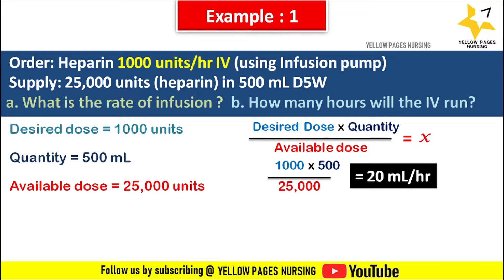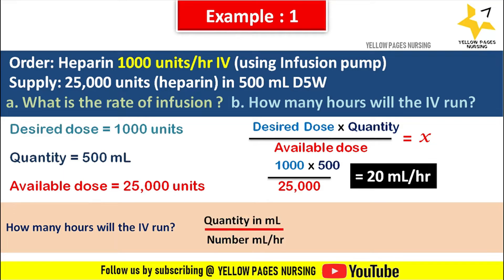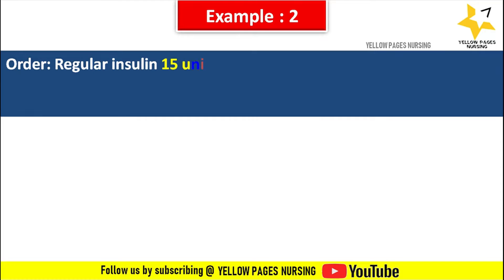Applying all values in the formula, we get 1,000 × 500 ÷ 25,000, which gives 20 ml per hour. So we set 20 ml per hour in the infusion pump. The next question is: how many hours will the IV run? The formula is quantity in ml divided by ml per hour, which is 500 ÷ 20, giving the answer 25 hours.